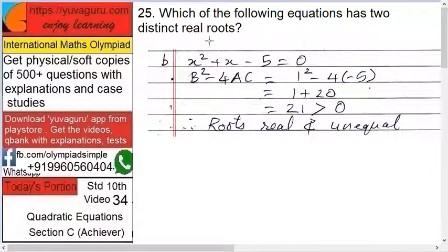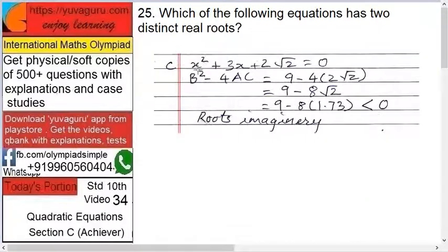Unequal means distinct. Now this satisfies the condition - B has real and distinct roots. Okay, B has real and distinct roots. Now C: x² + 3x + 2√2 = 0, so b equals to